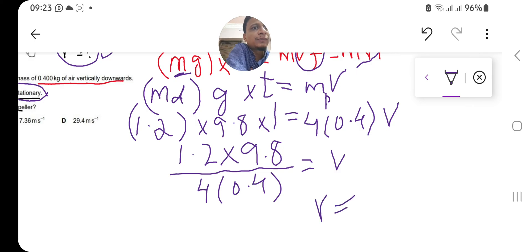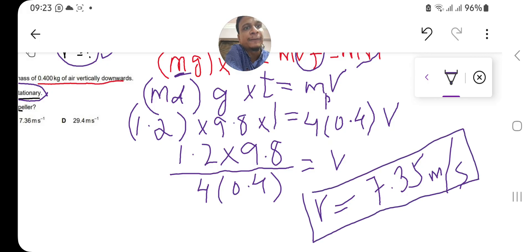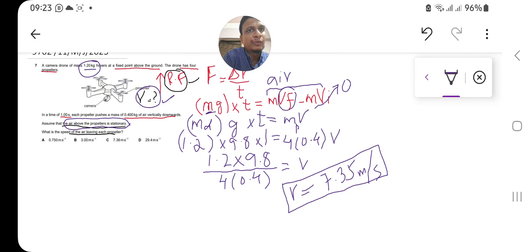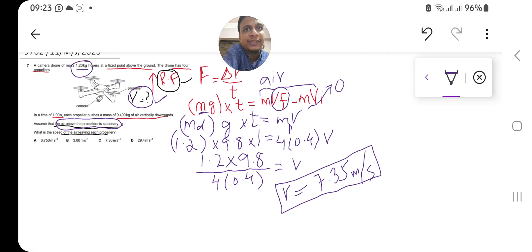Here we are getting 7.35 meters per second. This is the exclusive solution for you. You will not find the solution of the drone propeller anywhere. If you like this solution and the explanation of this question, just like, share, and subscribe to our channel for further videos. Thank you.